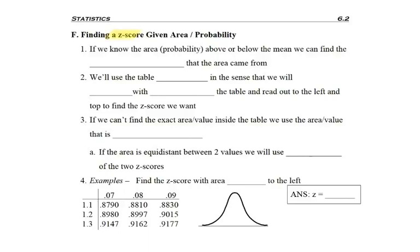So now we're going to talk about finding a z-score, and the only way we can do that is if we start by knowing an area or a probability. Remember, area and probability are basically the same thing. If we know the area or probability, we'll need to know if it's above or below the mean, which direction. But based on that, we can find the closest z-score that this area or probability came from.